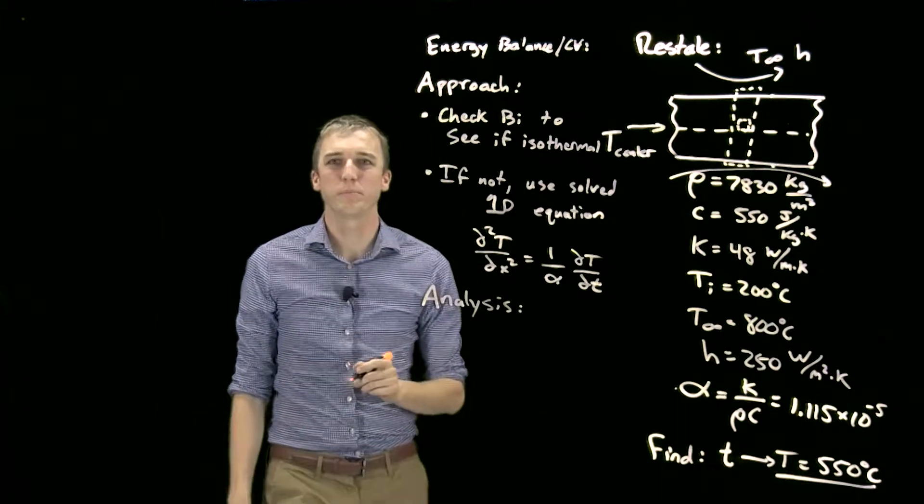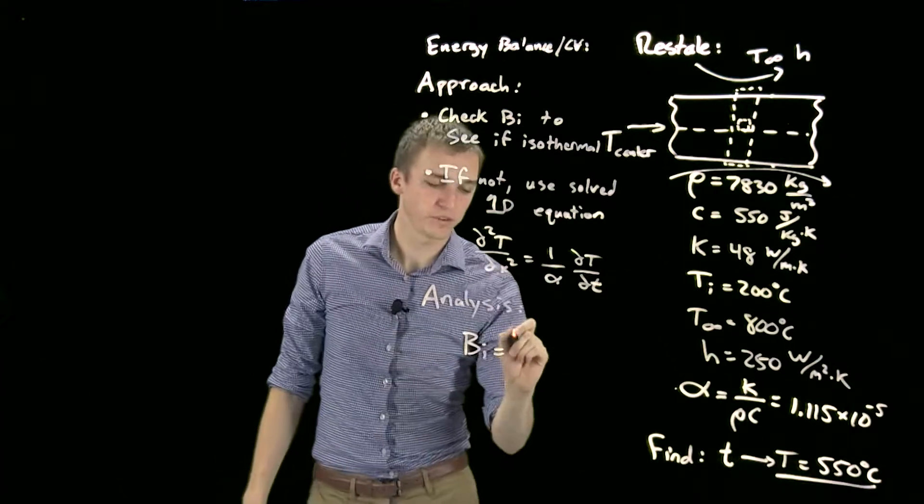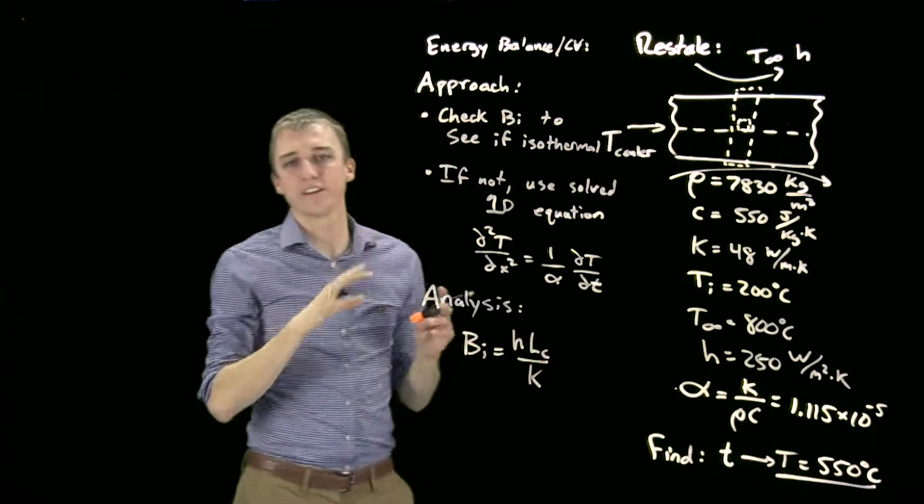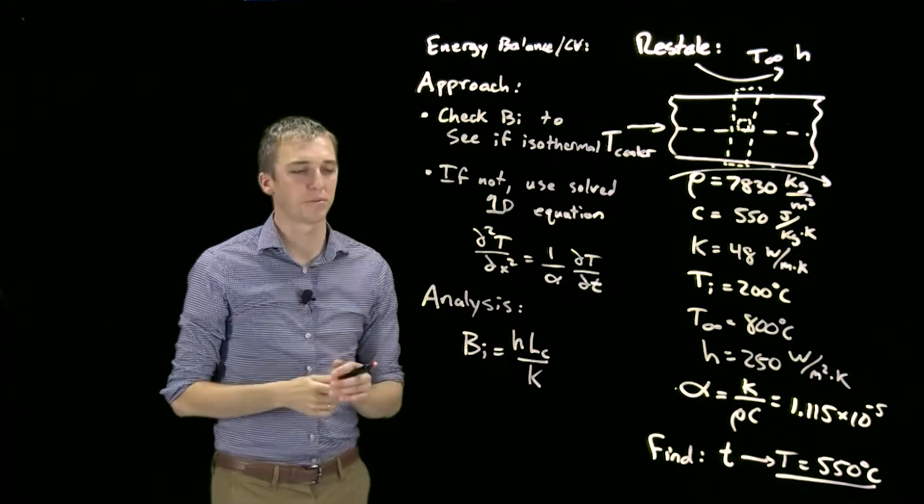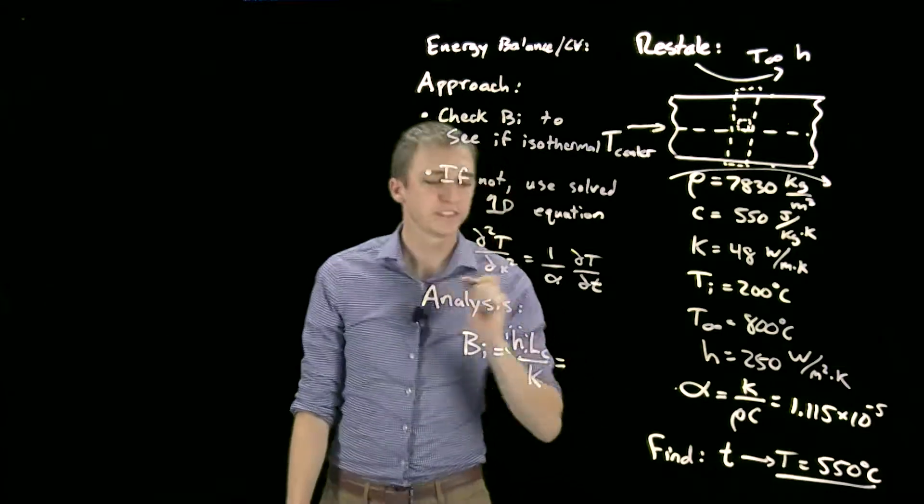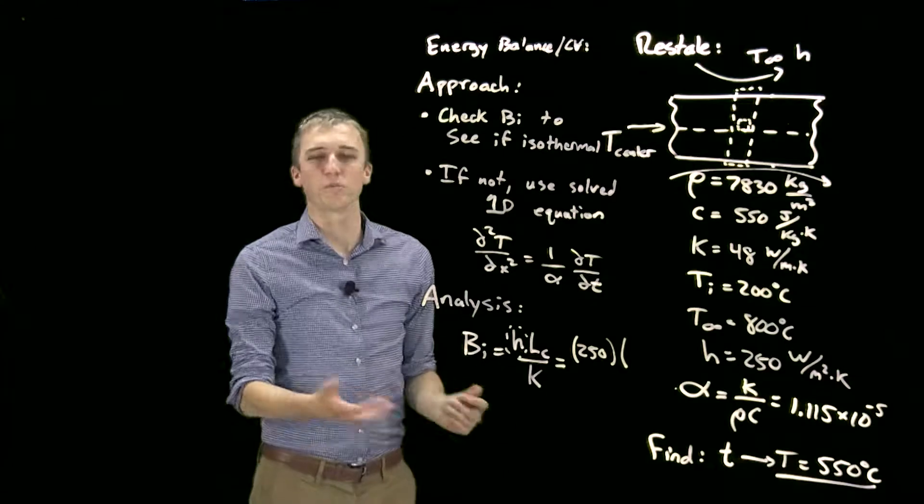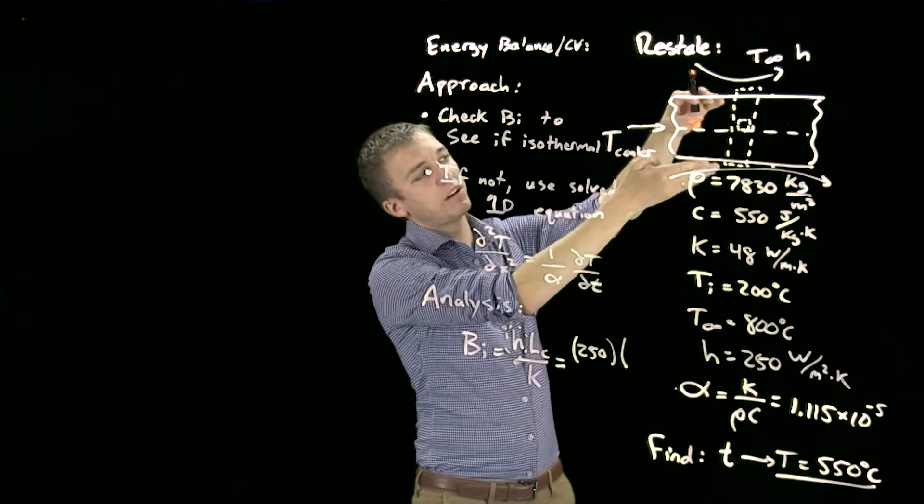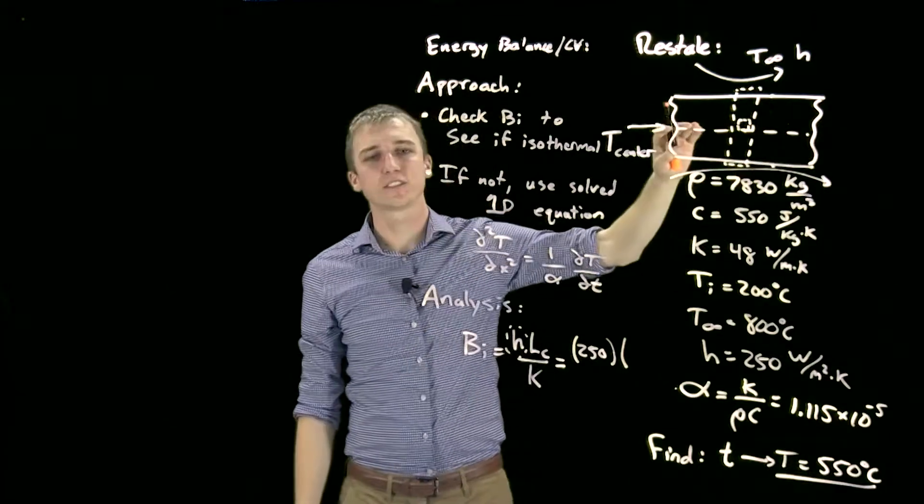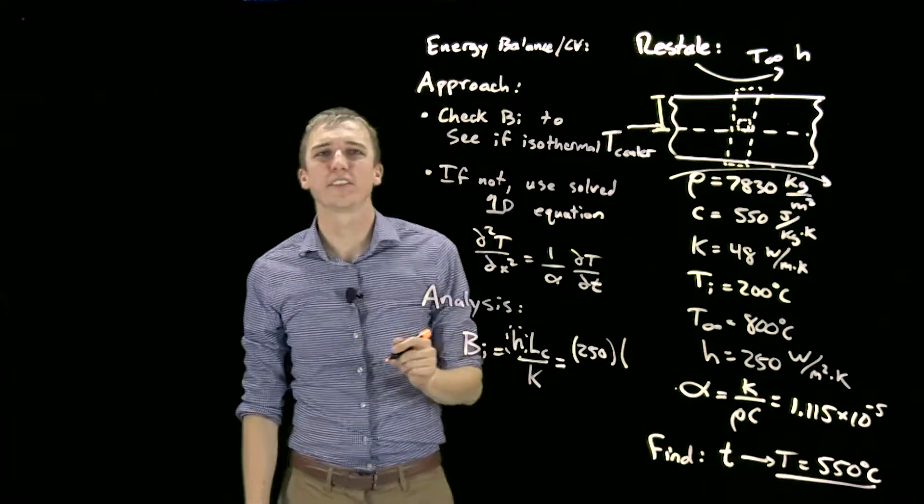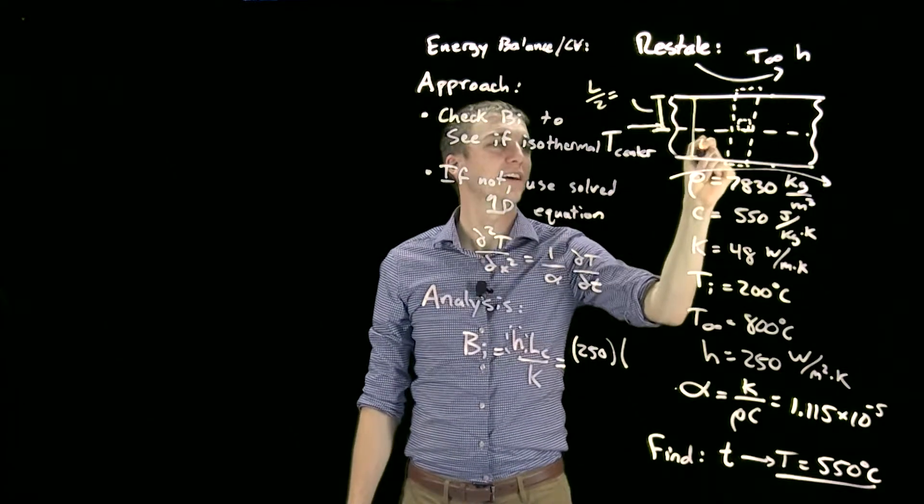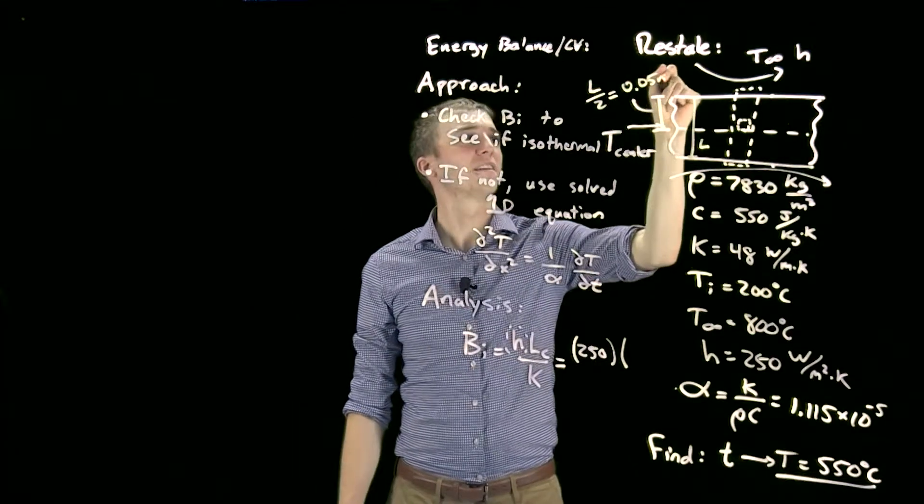We know our approach. Let's check our Biot number. Bi = hL_c/K. Remember this assumes we only have convection heat transfer leaving our surface. If we also have radiation, this Biot number would need to account for a total heat loss coefficient, not just a convection heat loss coefficient. Let's plug those in: we have h = 250. Now the hardest part—what is our characteristic length? For a plain wall with cooling on both sides, or heating in this case, our centerline temperature acts like an insulated surface. If that's the case, we only use half of the length, which I forgot to state, but that would be L/2 = 0.05 meters.